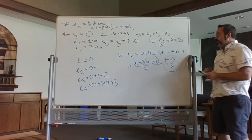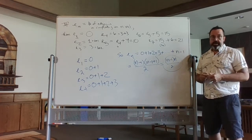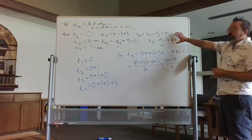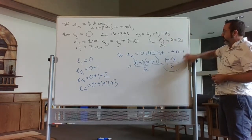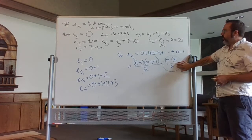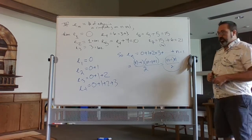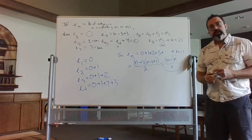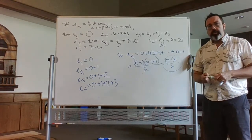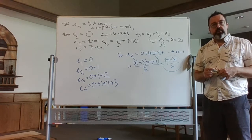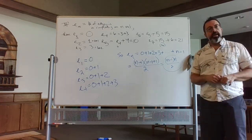That Gaussian sum formula we already computed came in handy because it gave us a formula right away without having to prove anything new. If we didn't have that formula, we could have re-derived it through induction. Go back to section 5.1 where we proved that formula by induction if you're unclear on where it came from.